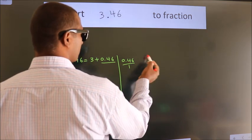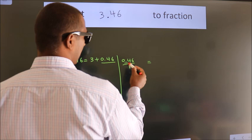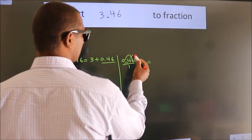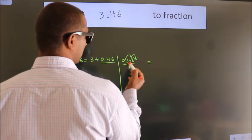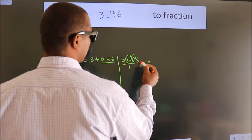To convert this to fraction, we have to move this decimal after 2 numbers. To move this decimal after 2 numbers, multiply it with 100.